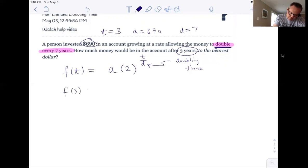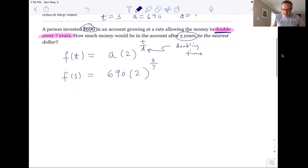So we want the function when t equals three. What are we starting at? We're starting at an initial amount of $690. And we double. And we want to know how much after three years, if we normally double in seven years. And guess what? Your calculator could eat that up.